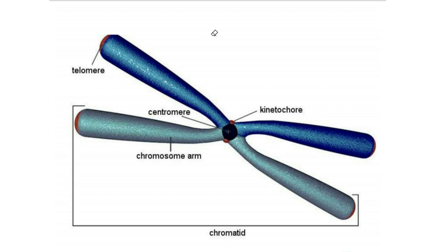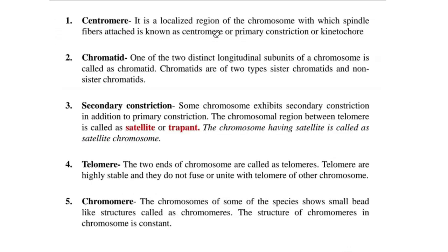In the diagram, the orange-colored end part is called the telomere, and the blue-colored part is the arm. The center is the centromere, and the side is the kinetochore. The half side of the chromosome is called the chromatid. A localized region of the chromosome to which spindle fibers attach is known as the centromere, or primary constriction, or kinetochore.